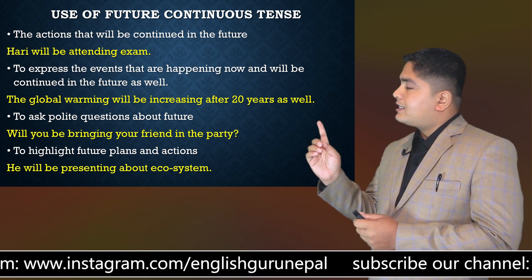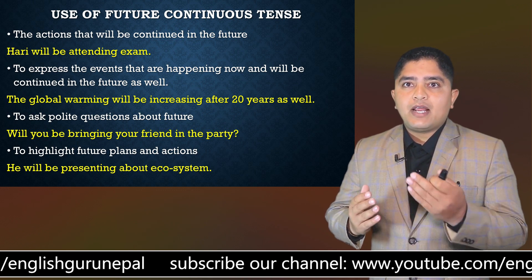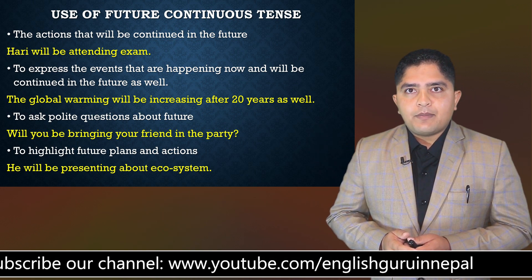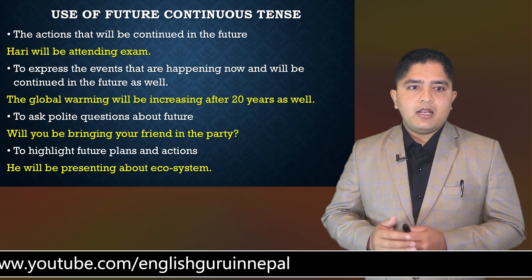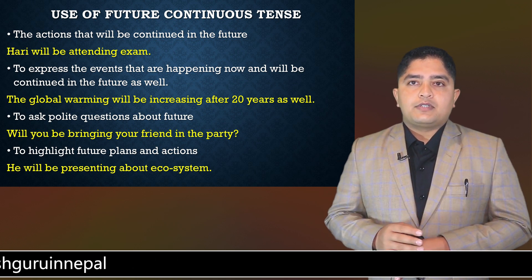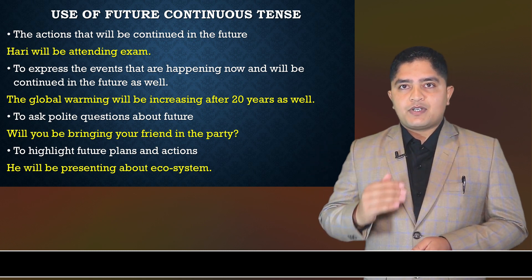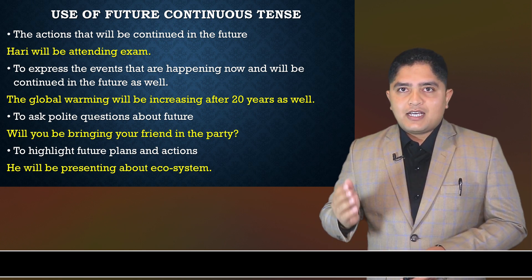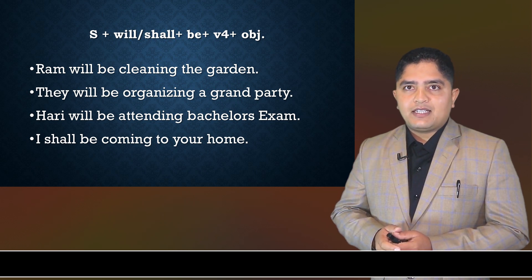Third, to ask polite questions to others about the future, we use future continuous tense. For example, 'Will you be bringing a friend to the party?' Fourth, to highlight future plans and actions, we use future continuous tense. For example, 'He will be presenting about ecosystem' — meaning he will be presenting about the ecosystem.